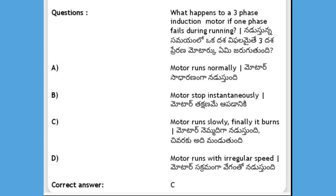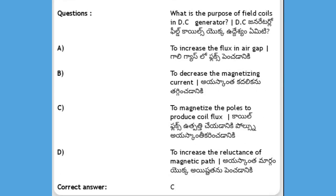What happens to a three-phase induction motor if one phase fails during running? Options: motor runs normally, motor stops instantaneously, motor runs slowly and finally it burns, motor runs with irregular speed. The answer is C, motor runs slowly and finally it burns.